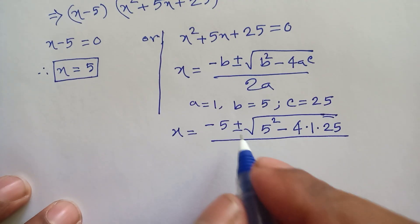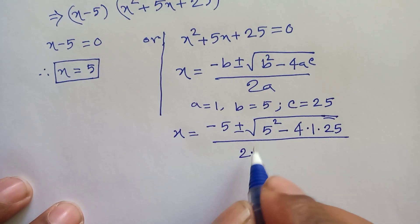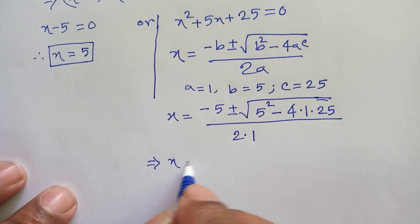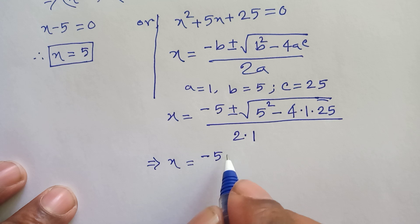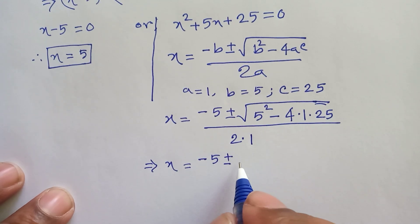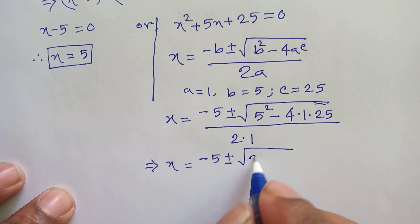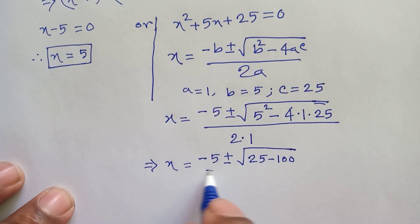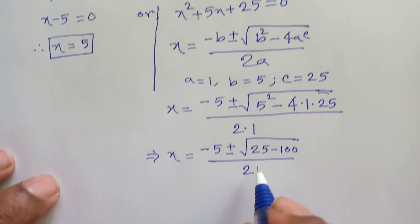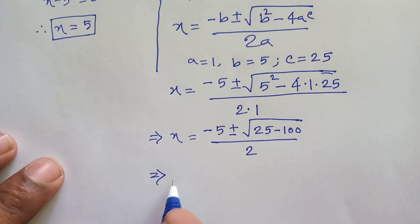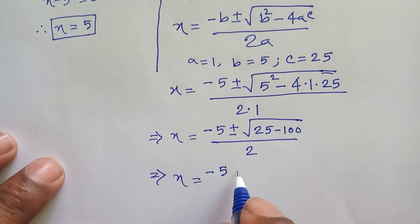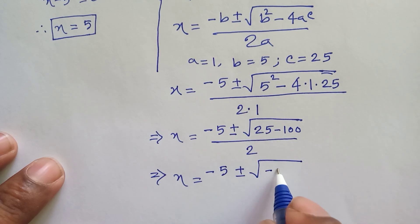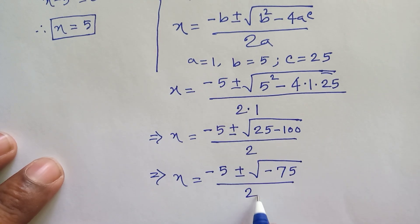Next step: x equals negative 5 plus or minus the square root of (25 minus 100) over 2, which gives x equals negative 5 plus or minus the square root of negative 75 over 2.